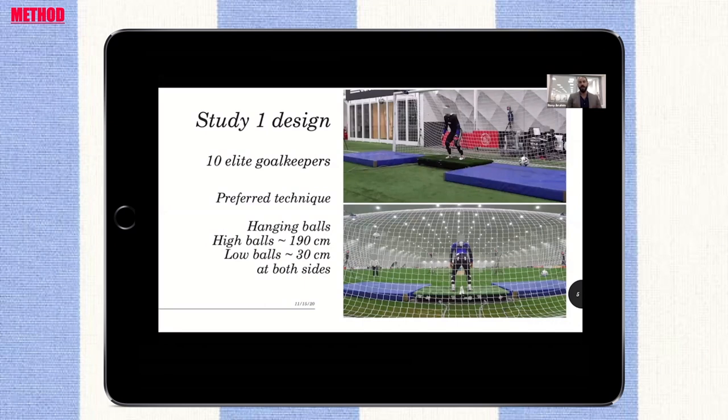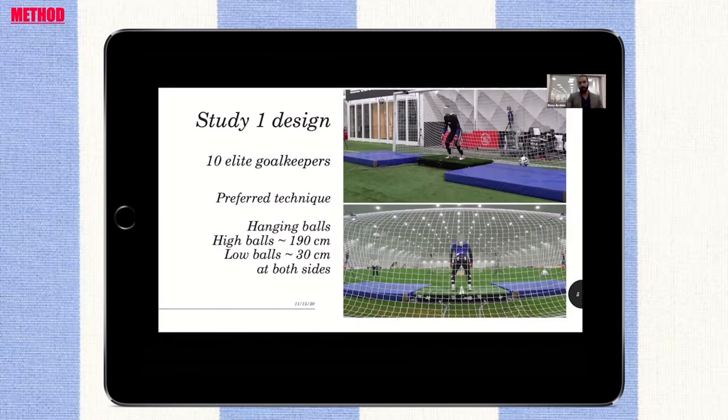Two custom-made strain gauge-based, one by one meter force plates were used to measure ground reaction forces produced by each leg separately at a rate of 1000 samples per second.